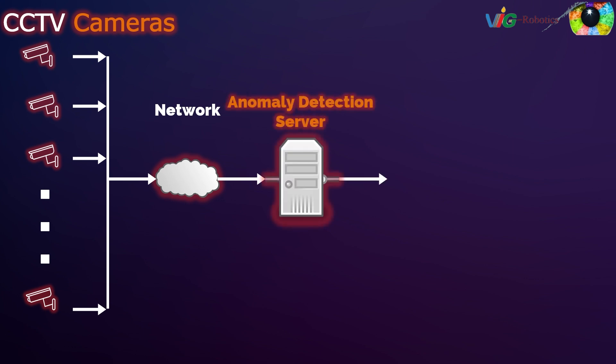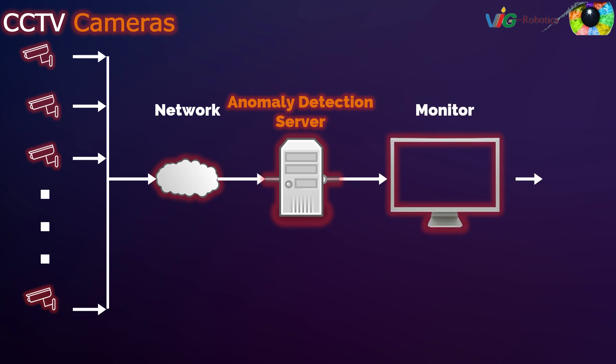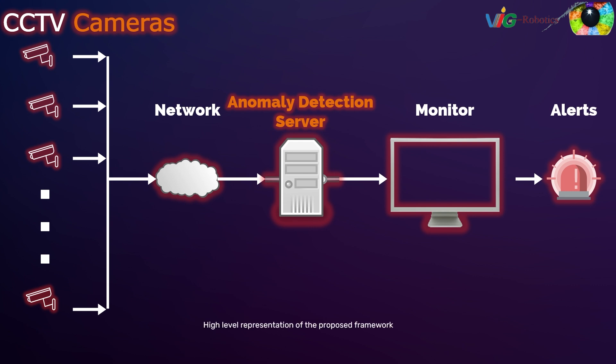The server acts as the central processing unit of the system and hosts the application for real-time video analysis for anomaly detection. Once an anomaly is detected, the system generates alerts and notifications to notify the controlling authorities about the potential threat.